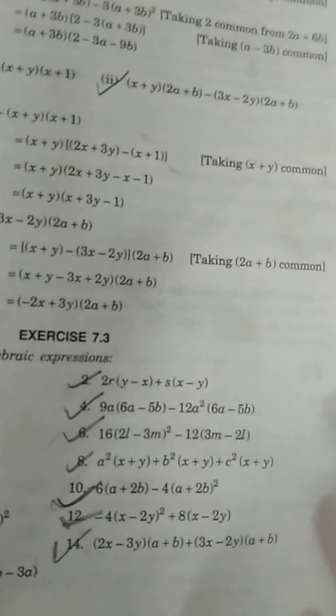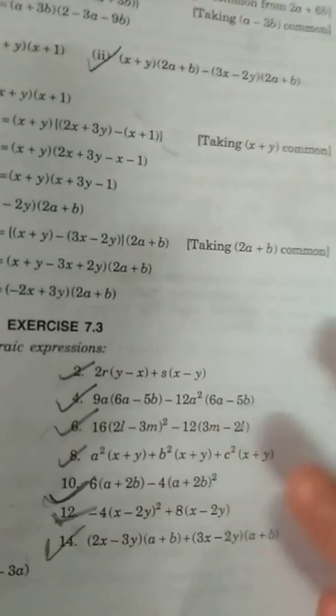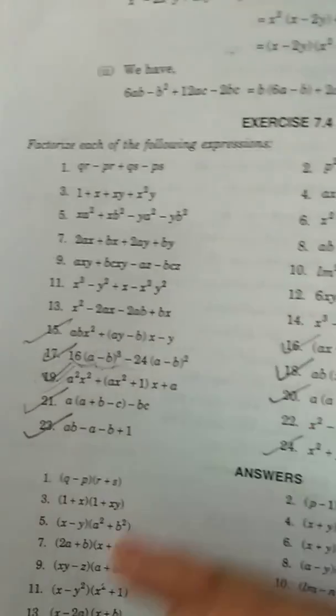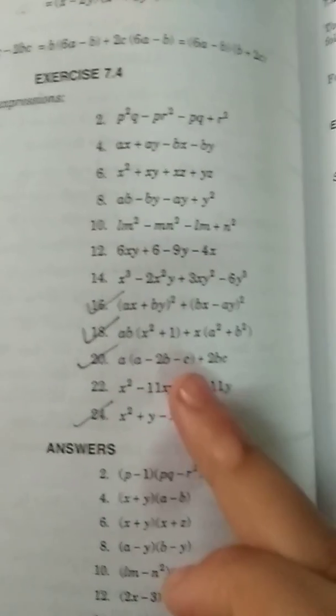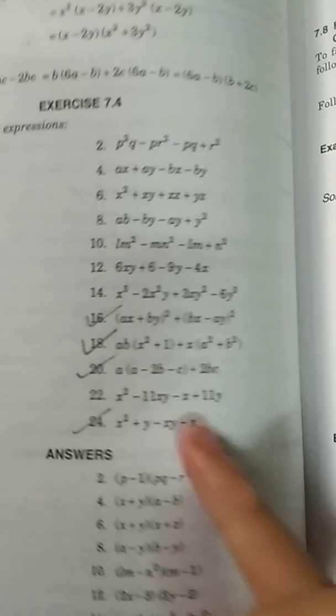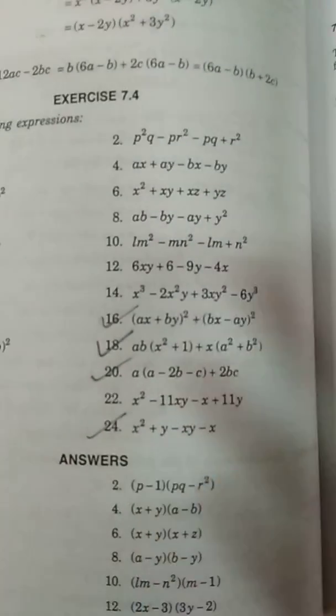important and 14th one is important. So these can be asked to factorize. After that, question 17th is important, and then from here 20th question is important. You can also do this 24th question because this type of question is mostly asked in the exam paper.